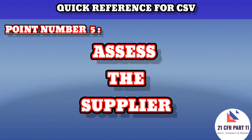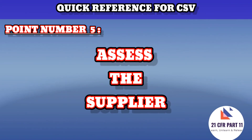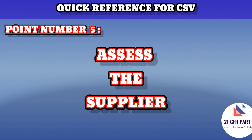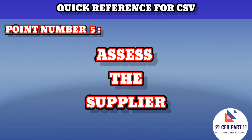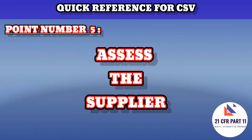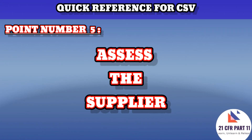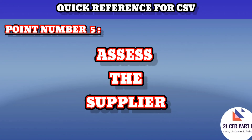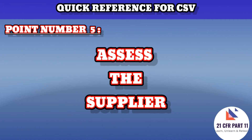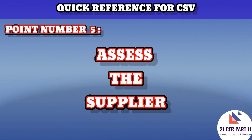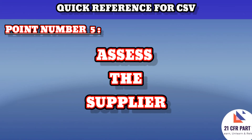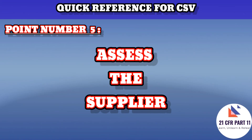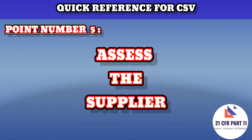Point number five says to assess the supplier. The purpose is to determine the adequacy of the supplier's quality system. The regulatory expectation per EU GMP Annex 11 says that the regulated user should take all reasonable steps to ensure the system has been developed in accordance with an appropriate quality management system. An additional benefit of assessing the supplier is that it can reduce in-house testing through tests already done by the supplier.